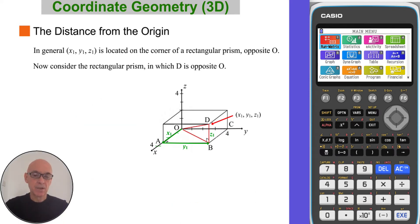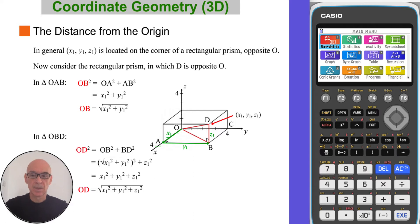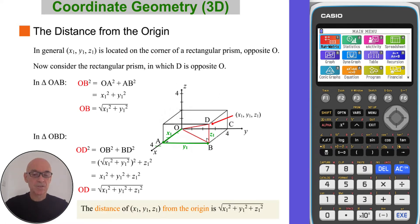If we now repeat this process for the point with coordinates x1, y1, z1, located at point D — applying Pythagoras' theorem in triangle OAB gives the length of OB equal to the square root of x1 squared plus y1 squared. Moving on to triangle OBD and applying Pythagoras' theorem again, squaring OB and BD and adding the results, then square-rooting gives a length of OD equal to the square root of x1 squared plus y1 squared plus z1 squared. So the distance of the point (x1, y1, z1) from the origin is found by square-rooting the sum of the squares of the coordinates.